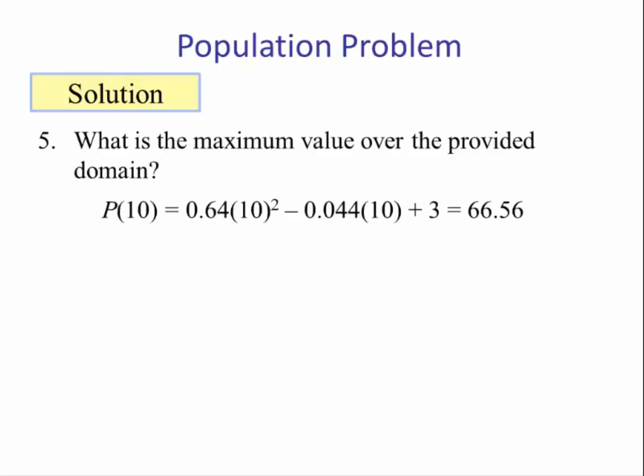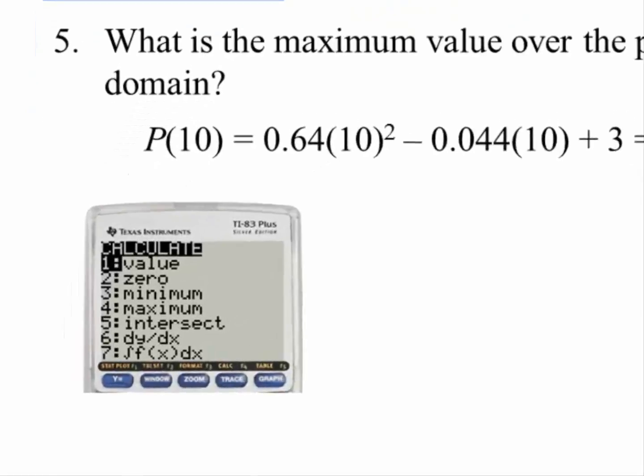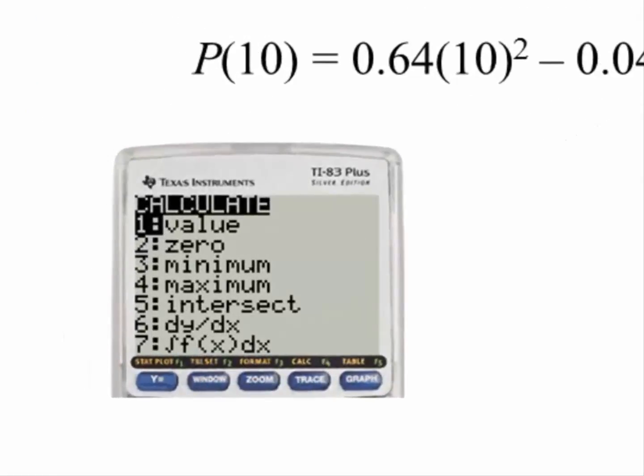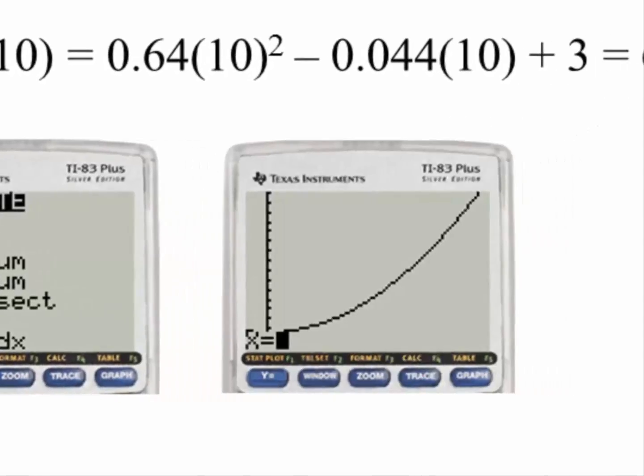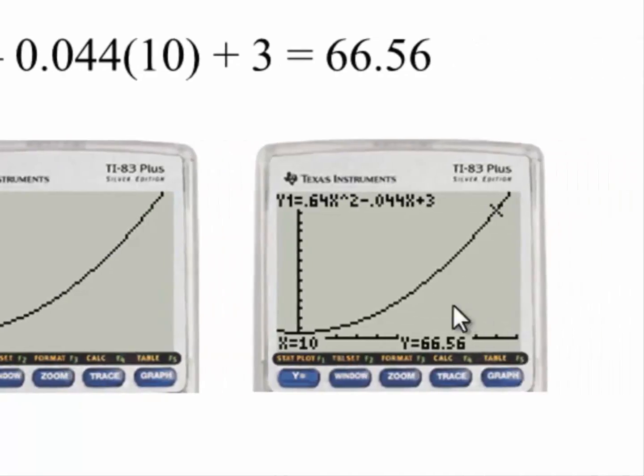Number five: what is the maximum value for the given domain? That would be when x is equal to 10, and this has been computed before. We have 66.56. We can verify this by using the graphing calculator. If we hit second and trace, which is calculate, go to value, the calculator will give us our graph. Then we type in 10, and it gives the corresponding y value. So this is another way that we can find an output for a given input.